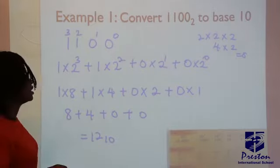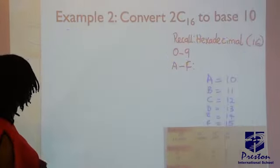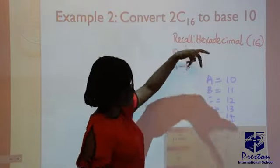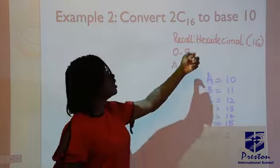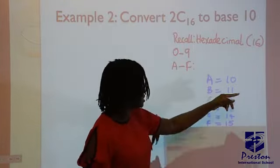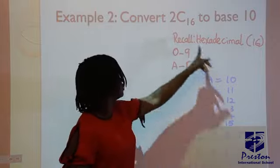The second example here we have 2C base 16. Whenever you see C, then you should quickly know that it's in hexadecimal where you have A to be 10, B 11, C here now will be 12.